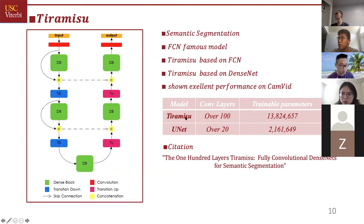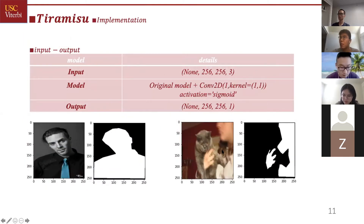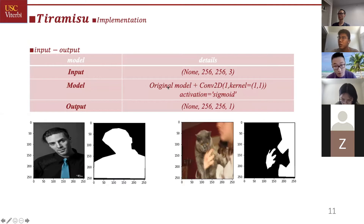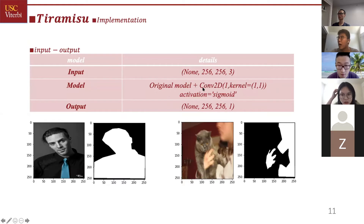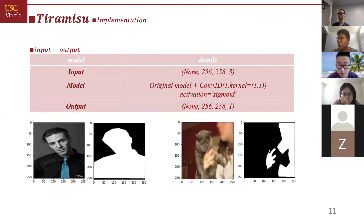You can see the Tiramisu model is much larger than U-Net. Here is the implementation of the Tiramisu model. We used the open-source GitHub code directly but made some modifications. We added a Conv2D layer to make sure the output of the Tiramisu model is 256x256x1, which is a grayscale probability map.